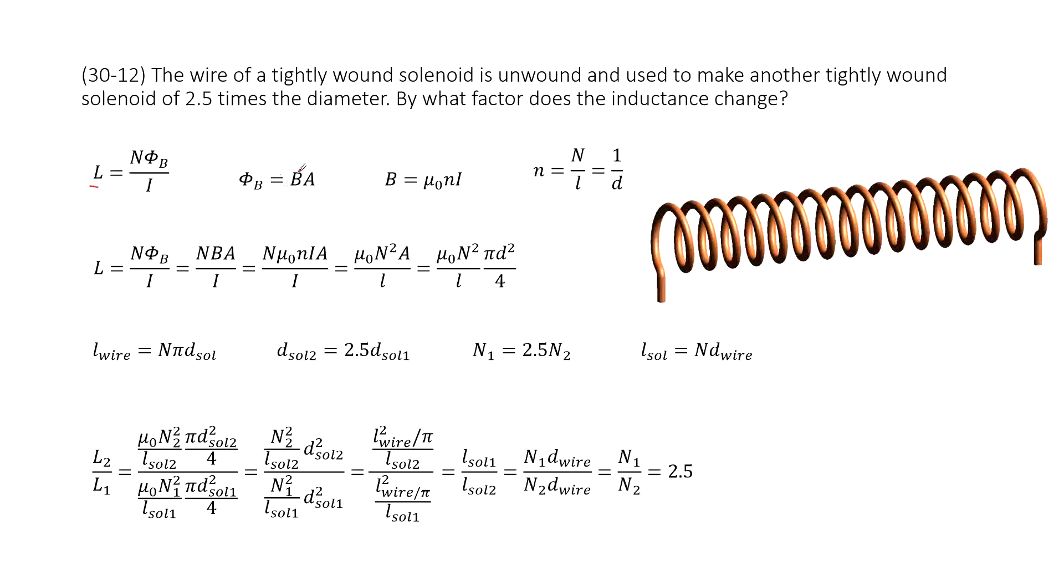And this Φ_B can write as B times A, right? The B magnetic field is for this solenoid μ₀ni. And n can write as how many turns N divided by L or 1 over d.